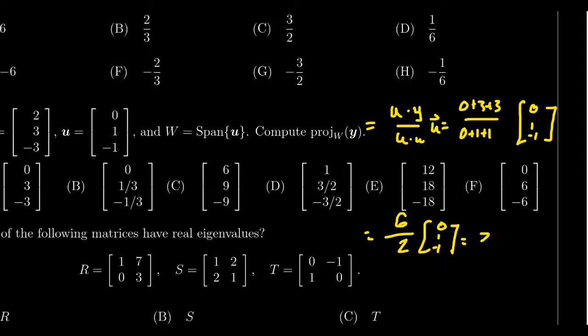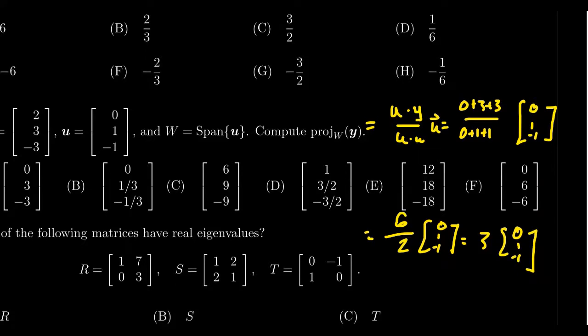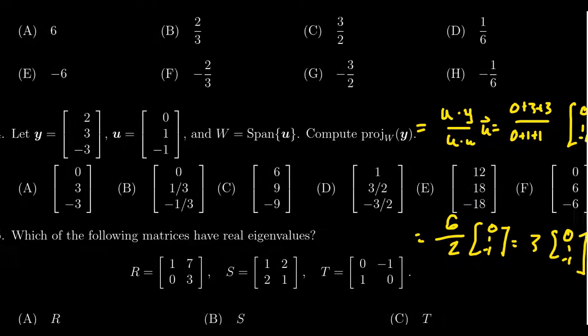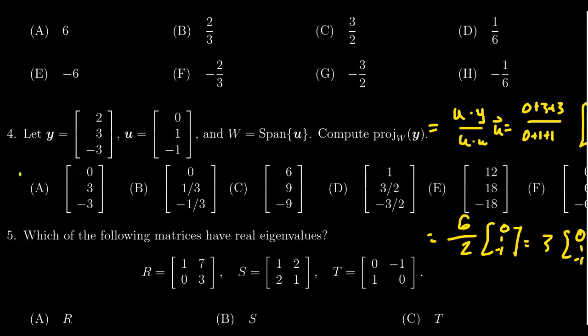So it's three times zero, one, and negative one. For which then if we multiply by three, we then get zero, three, and negative three, which we can see is choice A right here.